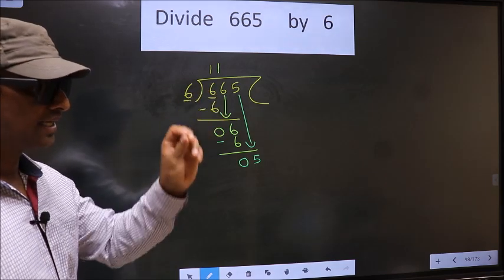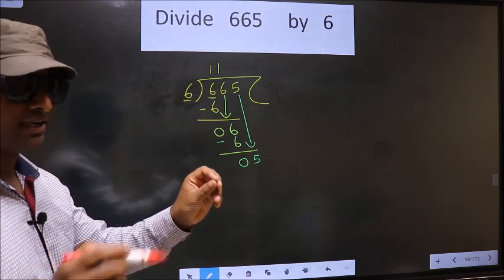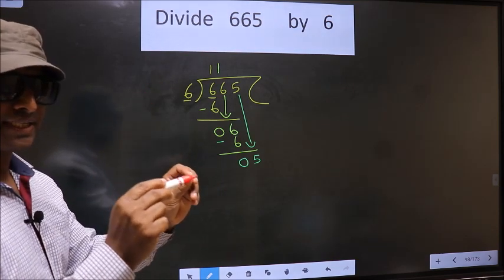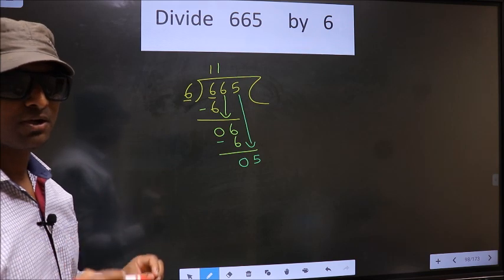I repeat: bringing the number down and putting a dot and taking 0, both at the same step you are not supposed to do.